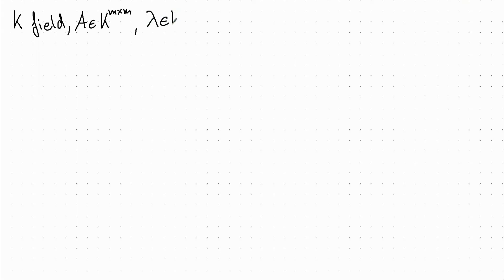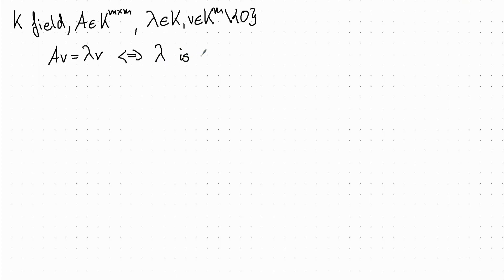So we let K be a field and A a square matrix with entries in the field. And if lambda is in K and V is in K to the n, nonzero, and they fulfill the following condition A times V equals lambda times V, then we call lambda an eigenvalue and V an eigenvector of A.